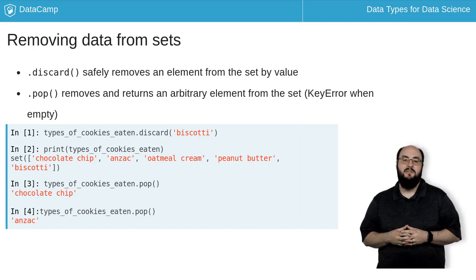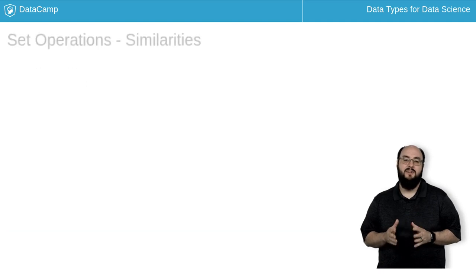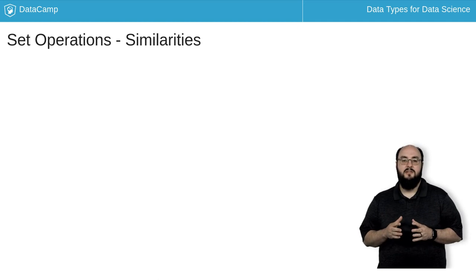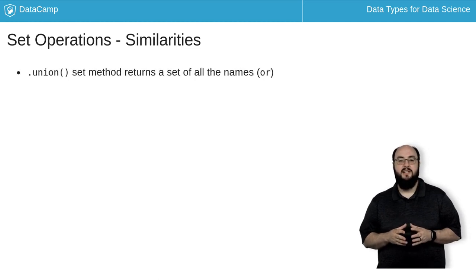Finally, we're going to leverage some of that set theory from math to perform some very quick comparison operations. The union method on a set accepts a set as an argument and returns all of the unique elements from both sets as a new one.